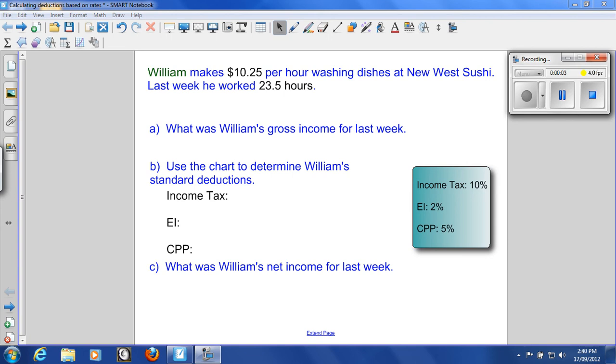William makes $10.25 per hour washing dishes at New West Sushi. Last week he worked 23.5 hours. What was William's gross income for last week?